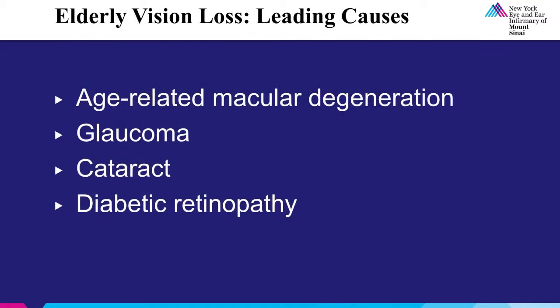Currently, within the United States, there are four leading causes for vision loss in the elderly. These include age-related macular degeneration, glaucoma, cataract, and diabetic retinopathy. During the remainder of this talk, I will review each of these conditions, their associated symptoms, findings on exam, and management.